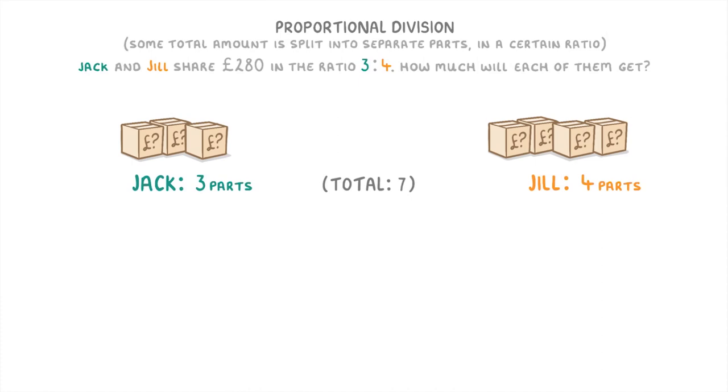This means that there's a total of 7 parts, and so to work out what each part is worth, we need to take the total amount of money, the £280, and divide it by the total number of parts, the 7, which will give us £40, meaning that each part has a value of £40.